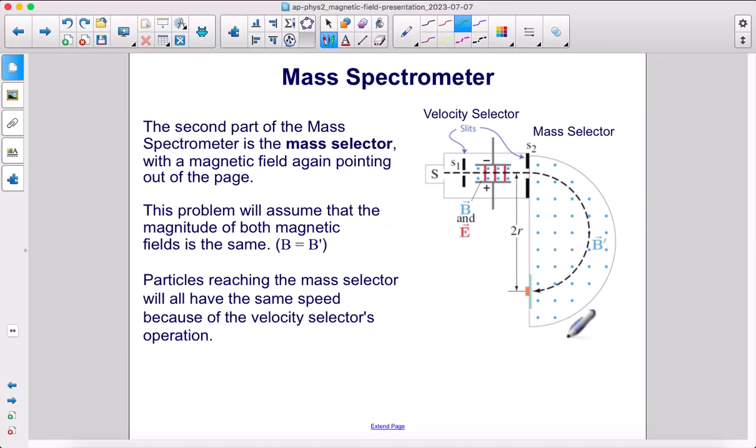The second part of the mass spectrometer is the mass selector. With a magnetic field again pointing out of the page, but no electric field any longer. This problem will assume that the magnitude of both magnetic fields are the same. So the magnetic field in here is going to have the same strength as the magnetic field over here. Particles getting to this point here will all have the same speed, because they've all gone through the velocity selector.